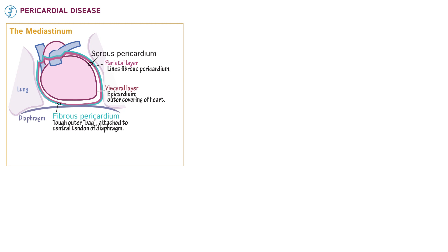Between the parietal and visceral layers, show the pericardial cavity, and write that this small space typically contains less than 50 mLs of fluid, which allows for free movement of the heart.